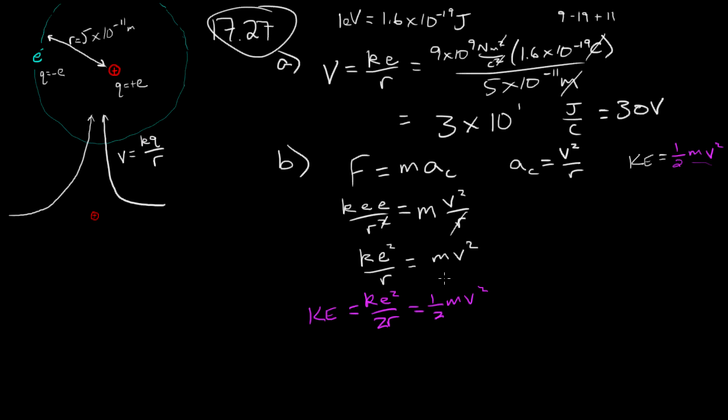Since this is the kinetic energy, the thing that it's equal to must also be the kinetic energy. So it says, what's the kinetic energy? We've got K E equal to K, which is 9 times 10 to the 9th newton meter per coulomb squared, times 1.6 times 10 to the minus 19 coulombs squared. Divide all of that by 2 times 5 times 10 to the minus 11.